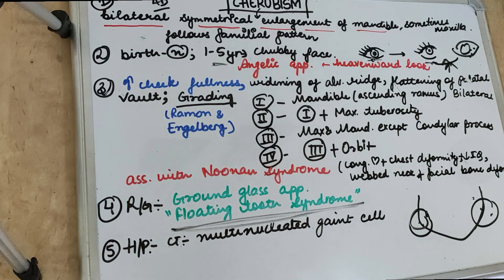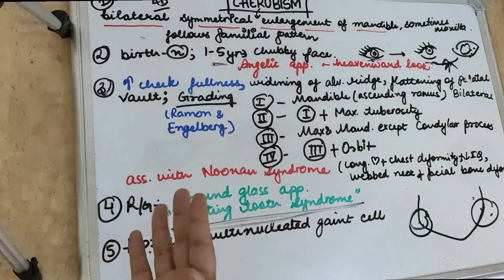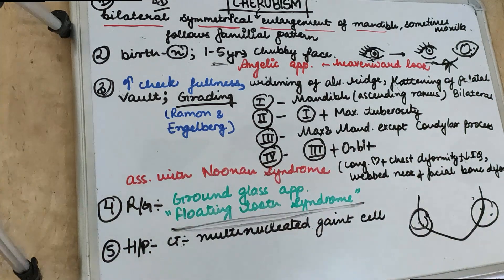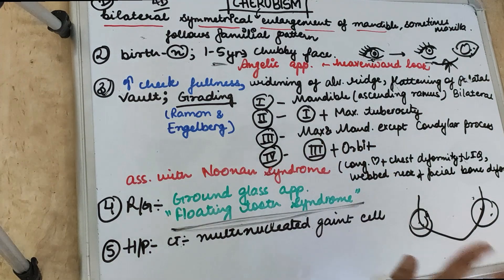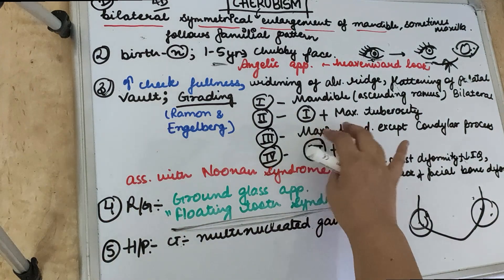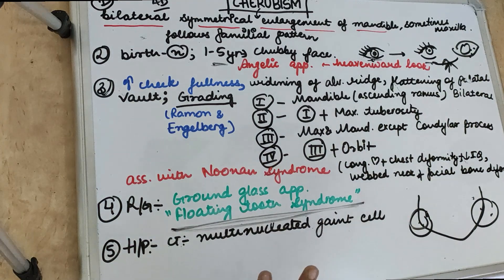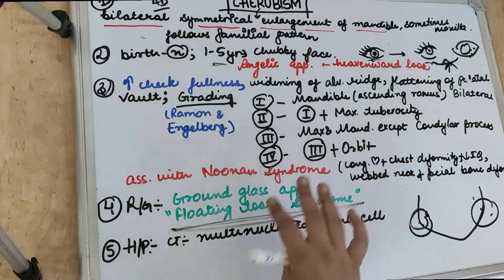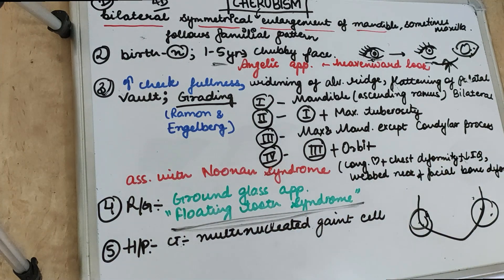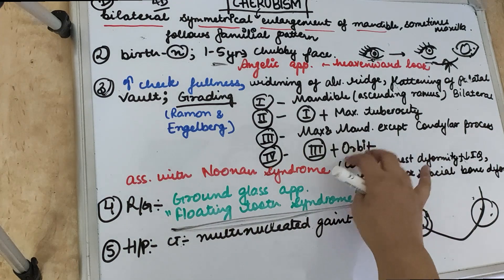There is a grading system for cherubism. Grade 1 involves the ascending ramus of the mandible bilaterally. Grade 2 involves the ascending ramus bilaterally along with the maxillary tuberosity on both sides. Grade 3 is massive involvement of both the mandible and maxilla, except the condylar process. Grade 4 is Grade 3 plus orbital involvement.